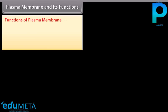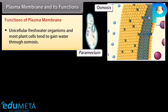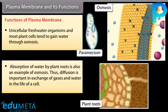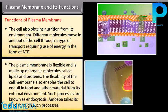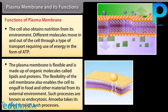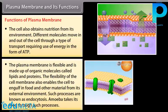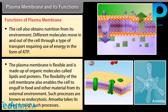Functions of plasma membrane: Unicellular freshwater organisms and most plant cells tend to gain water through osmosis. Absorption of water by plant roots is also an example of osmosis. Diffusion is important in the exchange of gases and water in the life of a cell. The cell also obtains nutrition from its environment; different molecules move in and out through a type of transport requiring energy in the form of ATP. The plasma membrane is flexible and made up of organic molecules called lipids and proteins. This flexibility enables the cell to engulf food and other materials from its environment — a process known as endocytosis. Amoeba takes its food through such processes.